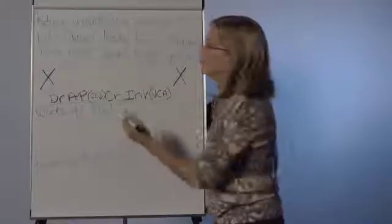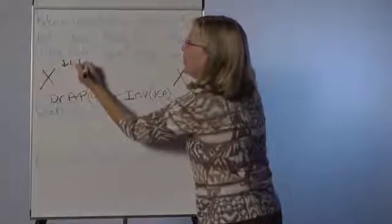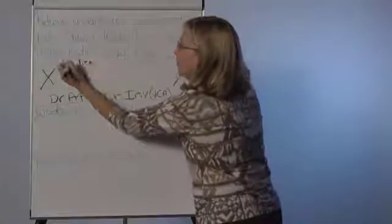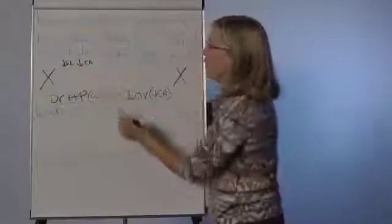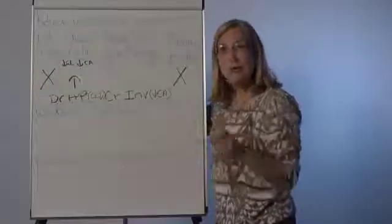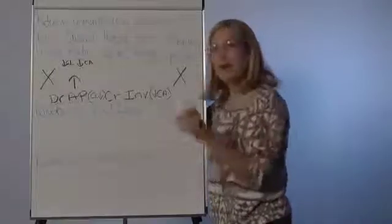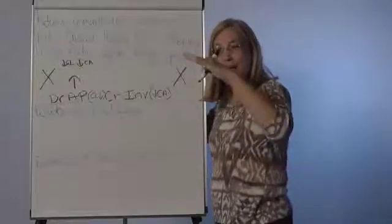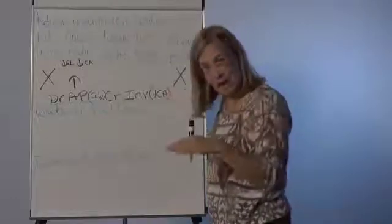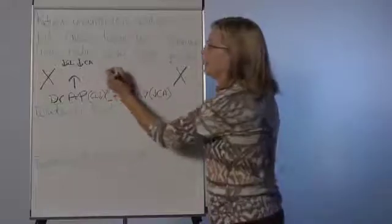When I look at the current ratio, because the liabilities are going down, because the current assets are going down the same amount, what it does is it makes your current ratio go up. Again, because the proportionality changes. Working capital though, because both assets and liabilities are going down by the same amount and we're subtracting one from the other, there's no change.